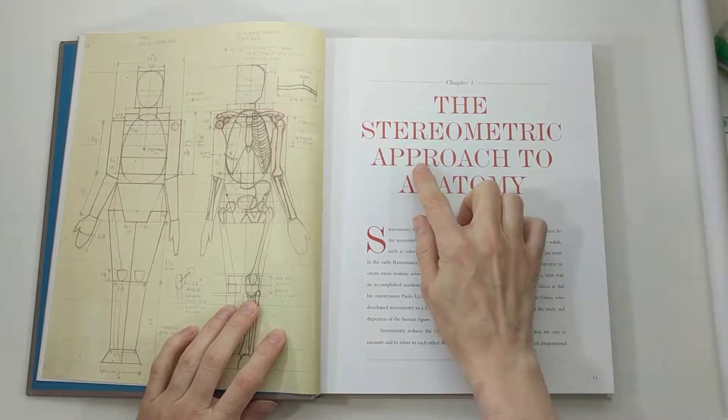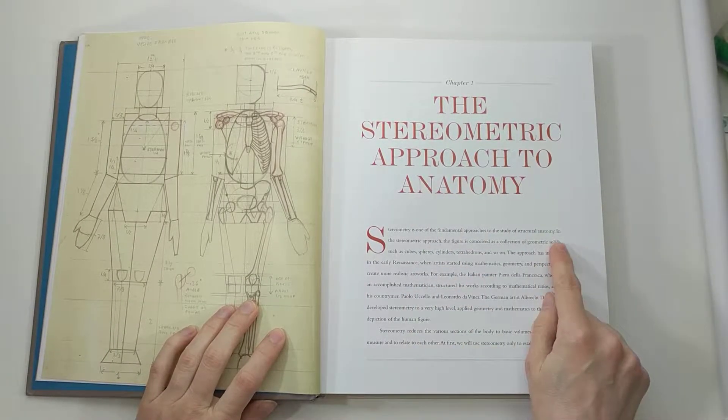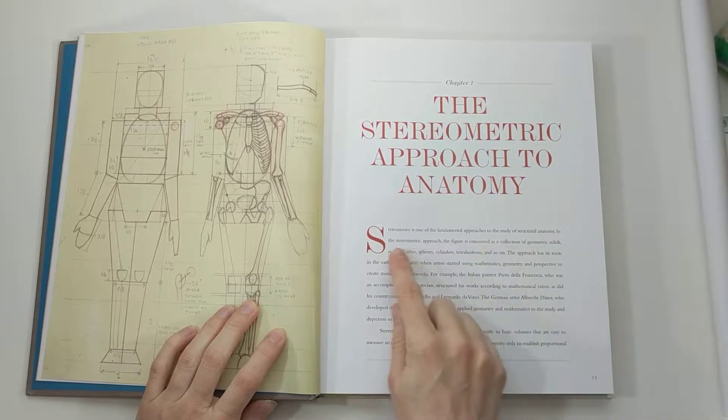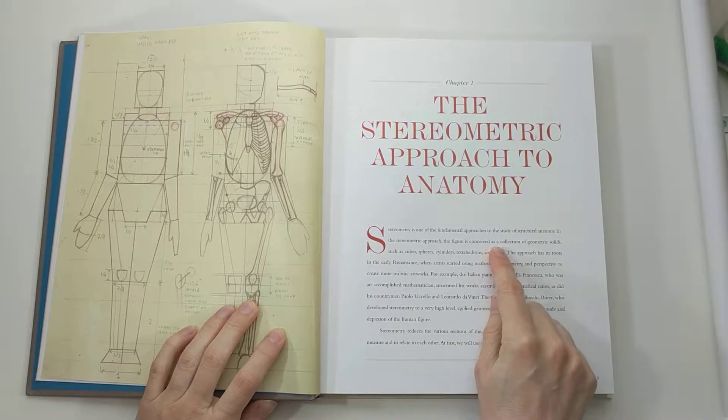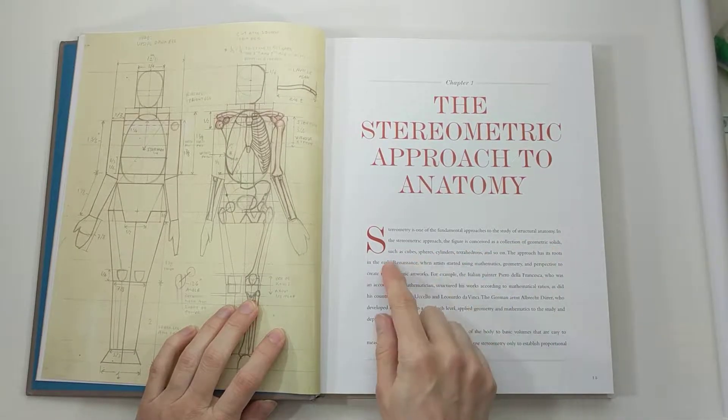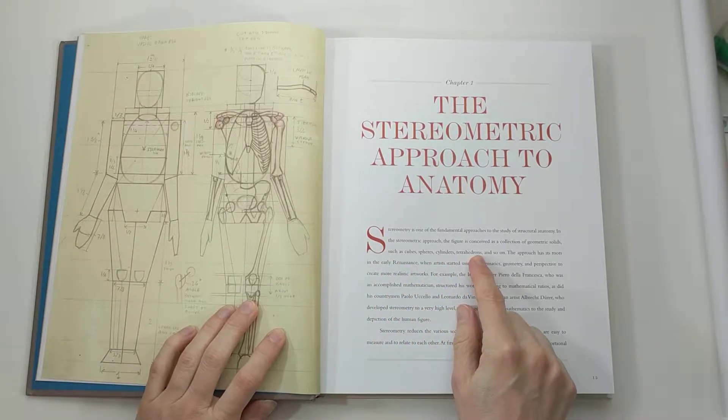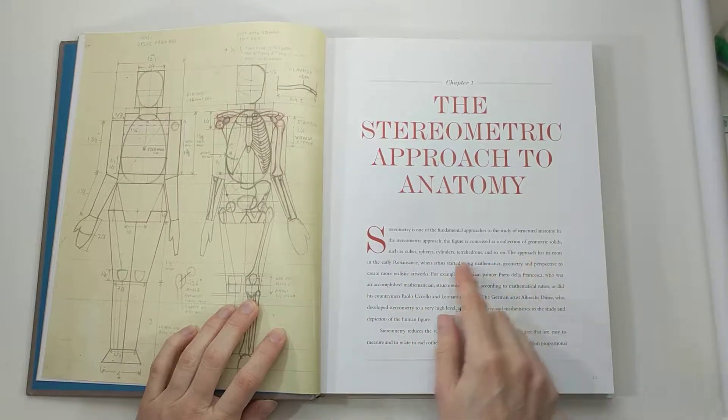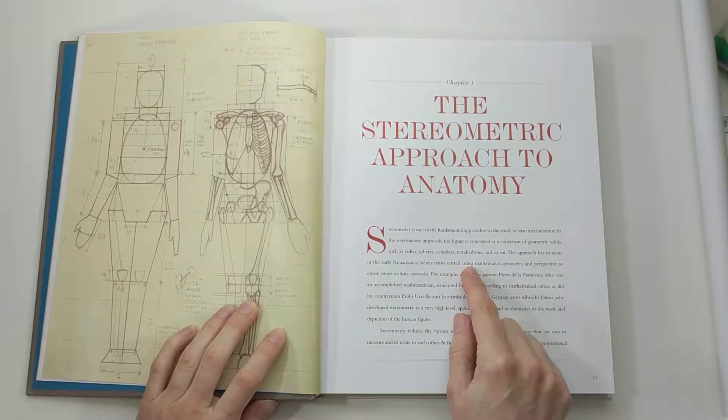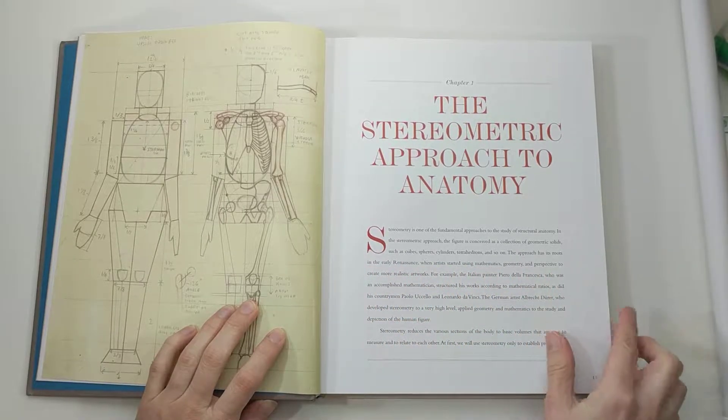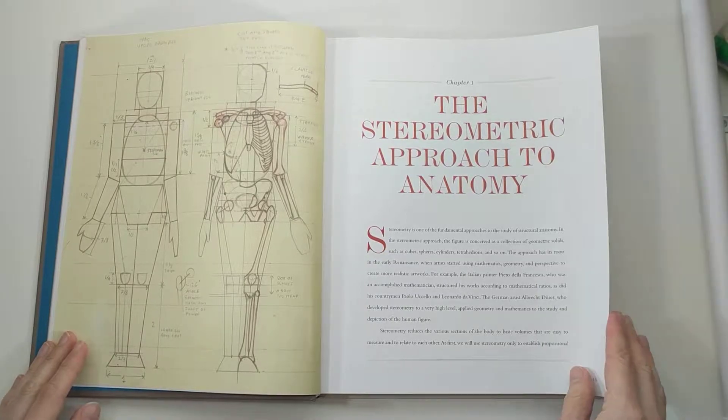He uses the stereometric approach to anatomy, and I'll just read real quick. In the stereometric approach, the figure is conceived as a collection of geometric solids, such as cubes, spheres, cylinders, and tetrahedrons. The approach has its roots in the early Renaissance, when artists started using mathematics, geometry, and perspective to create more realistic artwork.